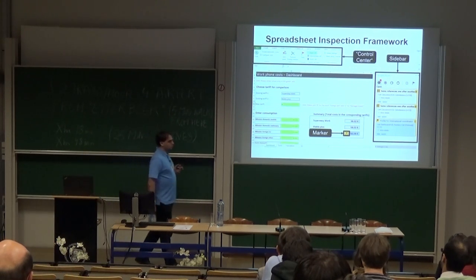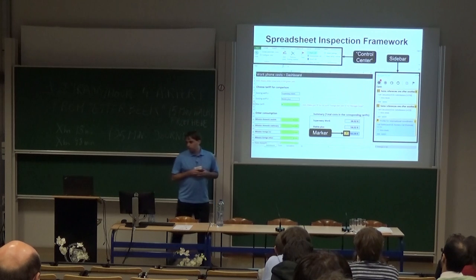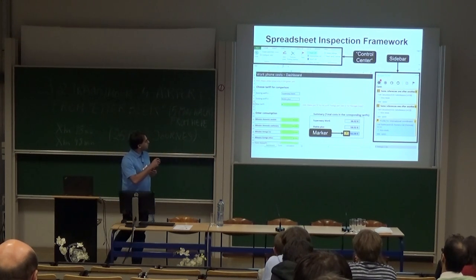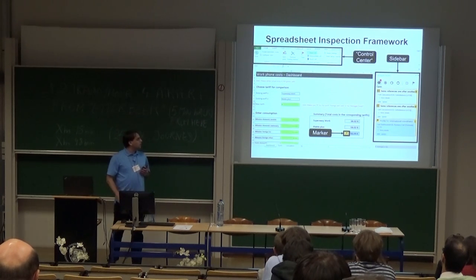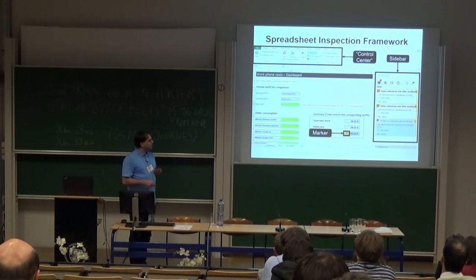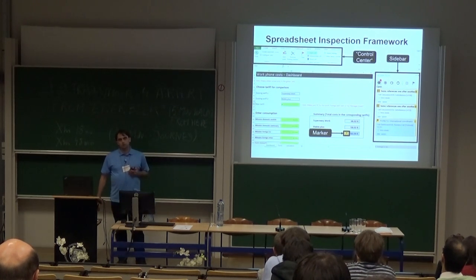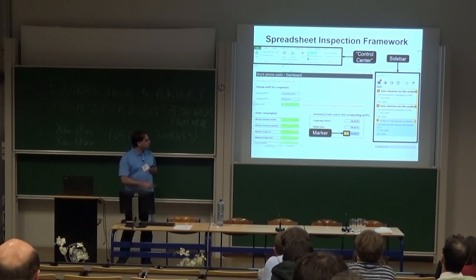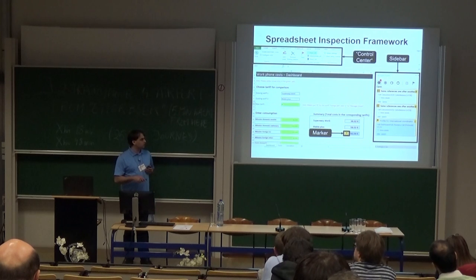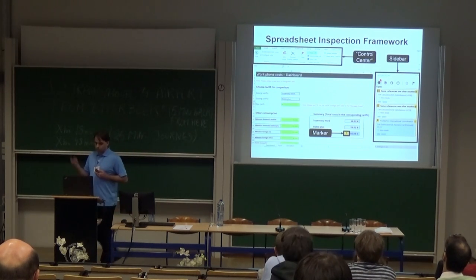Basically, you have this ribbon that we added to Excel, which is the control center where you can configure the inspections. You have a sidebar where violations are reported, and you have markers which show up in your actual spreadsheet indicating findings that correspond to the sidebar — and they are synchronized.